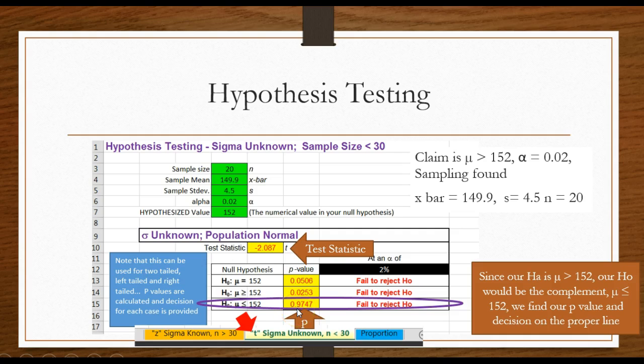If p is greater, maybe later, but I'm not going to reject it now, so I fail to reject. If p is greater, maybe later, but not now, I don't reject. P is less, please reject.